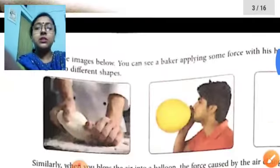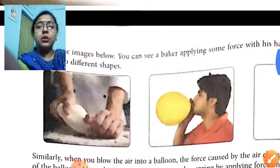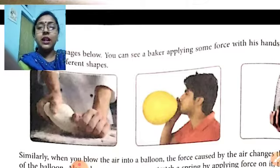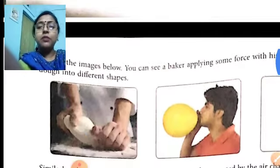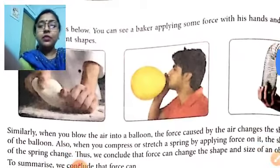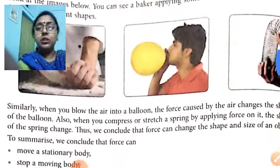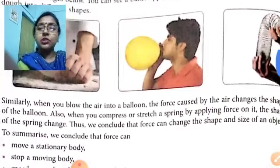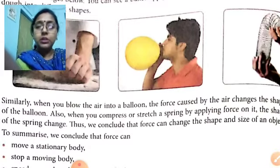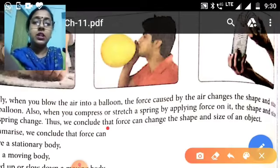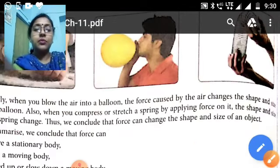Some pictures are given below. A baker applies force with his hands to change the shape of dough into a different shape. When we blow air into a balloon, the shape of the balloon changes. When we stretch a spring, its shape changes too. So we conclude that force can change the shape and size of an object. This is the fourth effect.